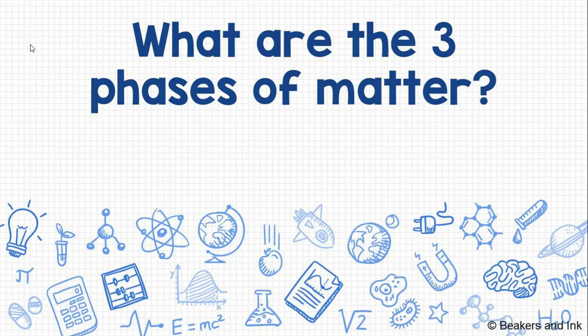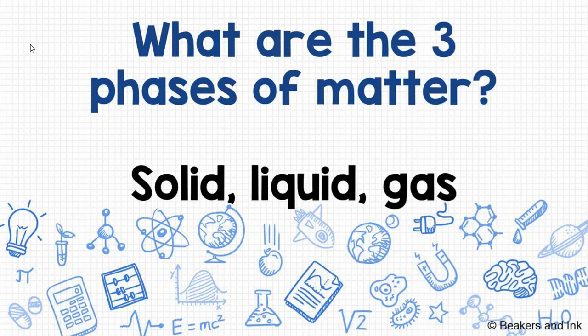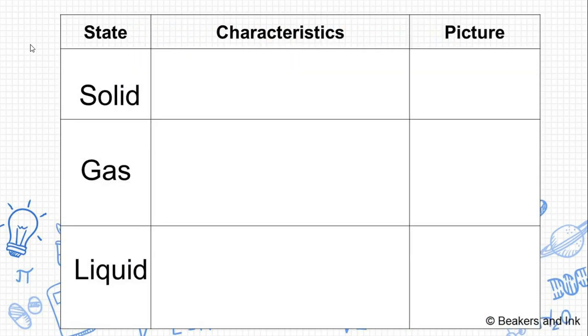There are three phases of matter. You're probably familiar with these phases already: solids, liquid, and gas. Let's take a second and look at some different characteristics and see how solids, liquids, and gases differ from each other.